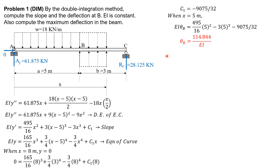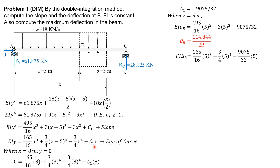For the deflection at B, substitute x equals 5 into the equation of the curve: 165/16 times 5 cubed plus 0 (term is ignored), minus 3/4 times 5 to the 4th, then minus 9075/32 times 5. So delta B equals negative 597.656 over EI. Note that C sub 1 divided by EI is the slope at A.